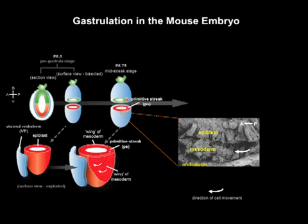At gastrulation, cells that will form the mesoderm and definitive endoderm ingress through the primitive streak, a morphologically distinct structure which marks the posterior end of the embryo, shown here on the right. As cells ingress, they undergo an epithelial to mesenchymal transition. Mesoderm emerges as two bilateral wings of cells that spread anteriorly in the space between two epithelia, the visceral endoderm on the outer surface of the embryo and the inner epiblast.